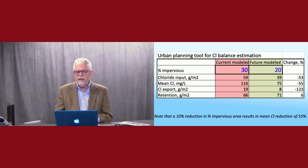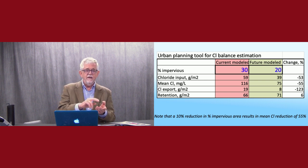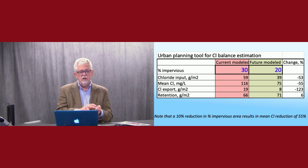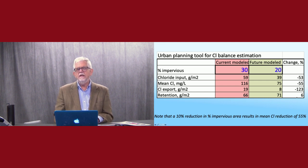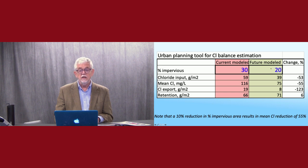The second tool is urban planning tool for chloride balance estimation. So I'm taking a watershed and I'm just assigning some characteristics, the percent impervious surface. And then I'm using this set of regression equations I was talking about where we take from the St. Anthony Falls database for these 11 watersheds. So we have chloride input versus mean chloride and mean total input versus chloride export and things like that. So these are all just embedded regression equations. And this is the outcome for the current model. This is just an example, 30% impervious surface.